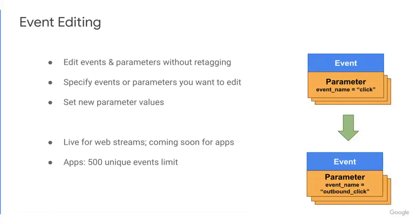A couple of things to be aware of: this feature is now live for web streams and coming very soon for apps. Also, for app measurement, there's a limit of 500 unique events per property, so you want to make sure that as you're generating new events you keep within this limit.